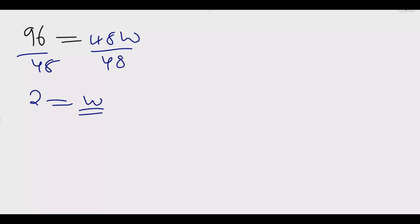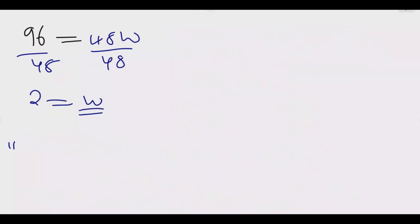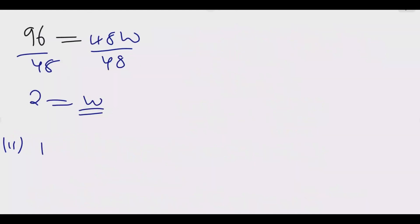The value of w is 2. Once you find this you answer the first part of the question and get the three marks. For Roman numeral 2, the nth term, the first step is to find the actual values of each term by substituting w = 2, and then find the exact value of r and the first term.